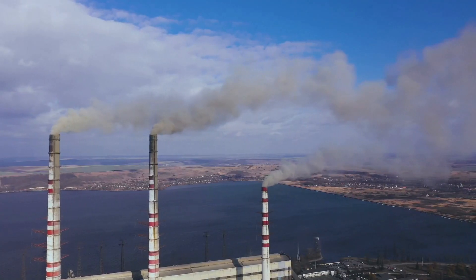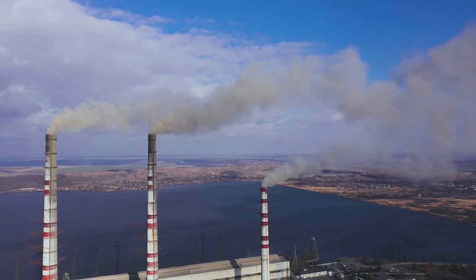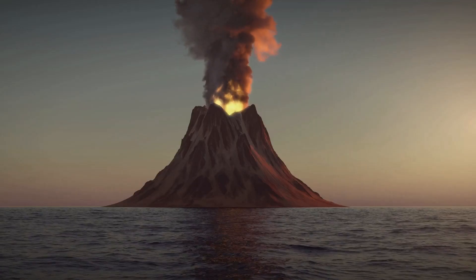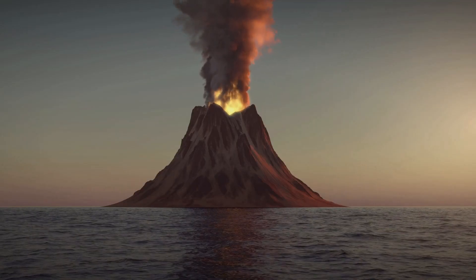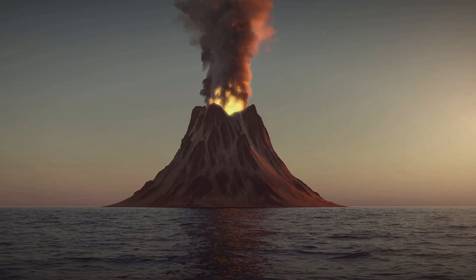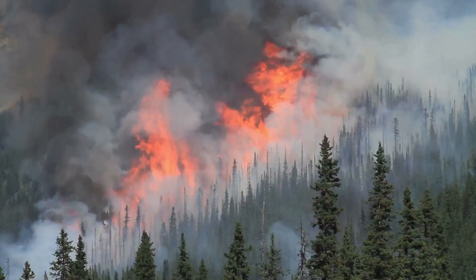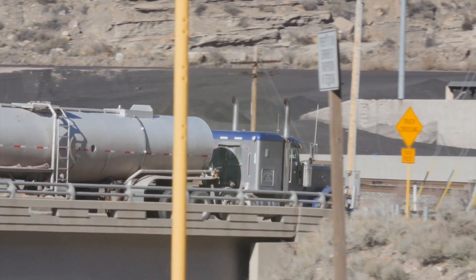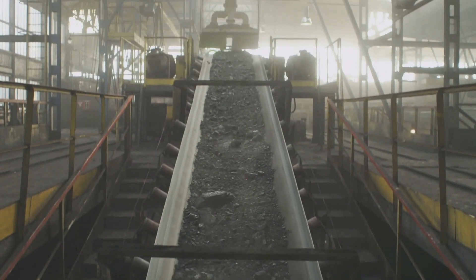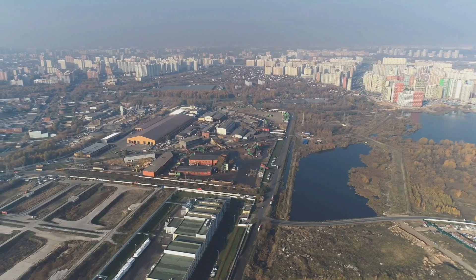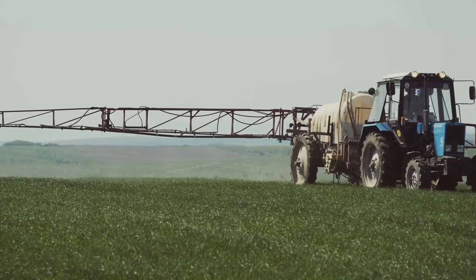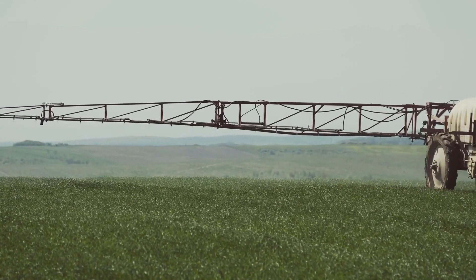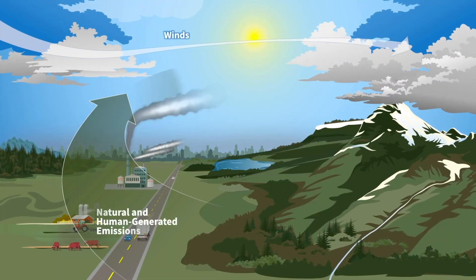Air pollution begins with the emission of pollutants directly into the air. While pollutants can occur naturally from sources such as erupting volcanoes and forest fires, human-caused pollutants come from the burning of fossil fuels by power plants, industries, and vehicles, agricultural activities, and other industrial processes. Once these pollutants enter the atmosphere, chemical reactions create other harmful compounds.